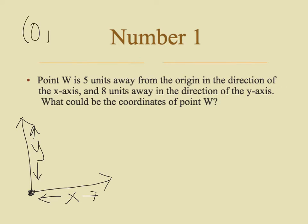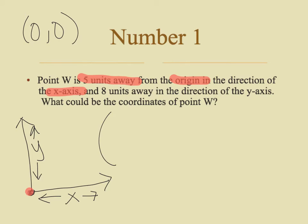The origin, remember, has the coordinate (0,0). So let's go back to the problem and figure out what it is asking us. First of all, it tells us that it is five units away in the direction of the x-axis, and we're starting at the origin. If I'm starting at the origin and moving in the direction of the x-axis, I'm going to be moving left or right. So if I know that I'm moving five units on the x-axis, I know that my x-coordinate is going to have to be five.